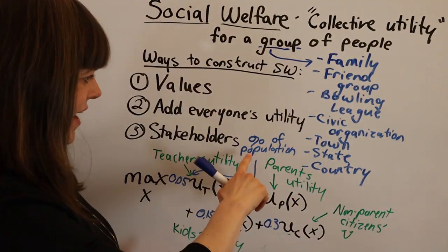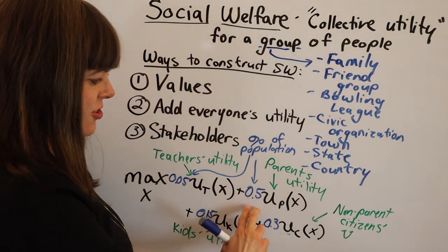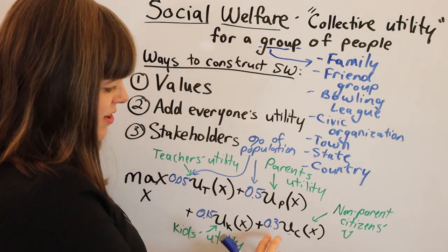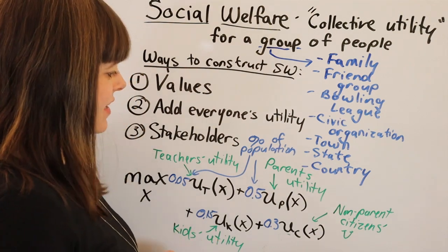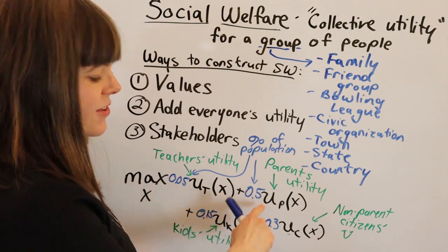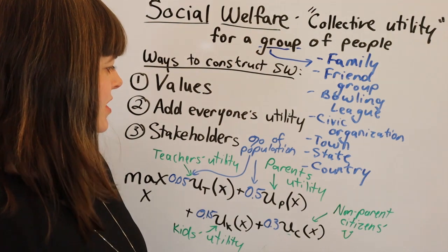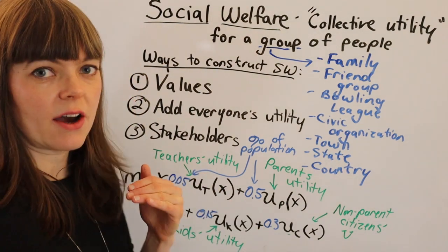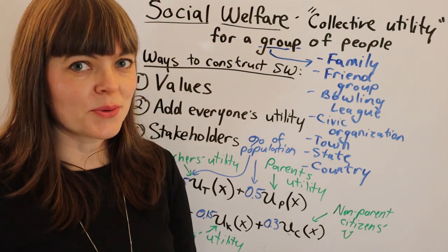Here we have the percentage of the population belonging to each group: 5% teachers, 50% parents, 15% children, and 30% non-parent citizens of the school district. These all add up to 100, so we're weighing everybody's utility equally, which is one option. So I've laid out three different ways of setting up a social welfare function that can be used when analyzing how to make decisions for groups.